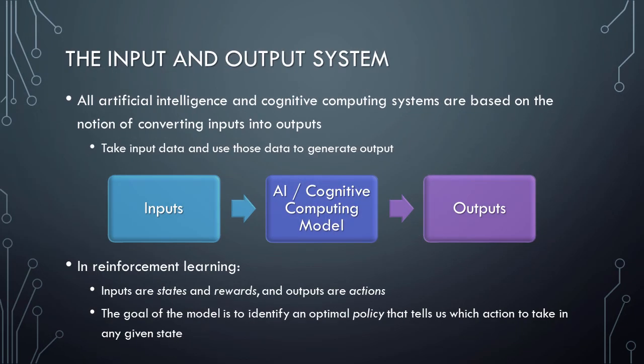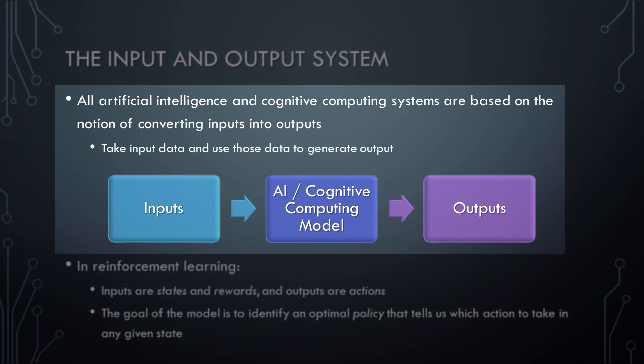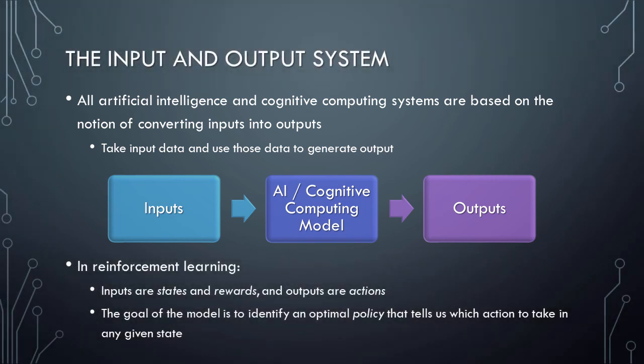The first principle that we'll learn about is the input and output system. It's important to understand from the outset that the input and output system is not just for reinforcement learning. Indeed, all artificial intelligence and cognitive computing systems are based on the notion of converting inputs into outputs. All AI and cognitive computing systems take input data and use those data to generate output, and reinforcement learning is no exception. This notion of converting inputs to outputs is a very familiar part of the human experience. For example, if you are driving a car or riding a bicycle, your senses are constantly gathering input about what's happening around you. Your mind uses this information to continuously generate a series of outputs, which in this example might be specific movements of your arms, legs, hands, or feet, all of which are oriented toward achieving a larger goal, such as arriving at your destination safely.